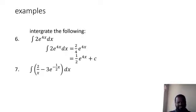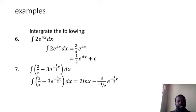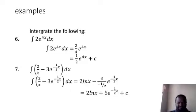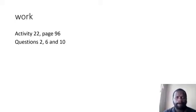For question seven, the integral of 2 over x minus 3e exponent negative half x — there are two terms. The first term, 2 over x, is in the form a over x, so it introduces a logarithm. The second term is exponential: a is negative 3 and k is negative half, so you divide negative 3 by negative half to get positive 6. The result is 2 ln x plus 6e exponent negative half x plus c.